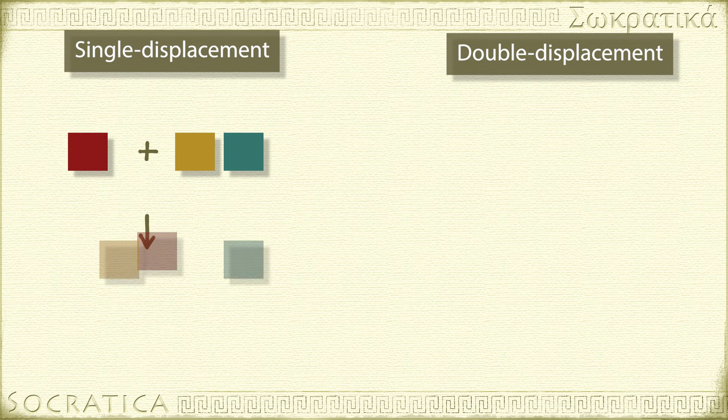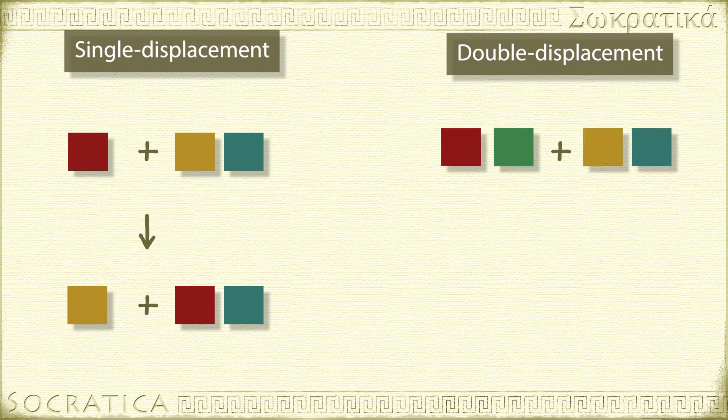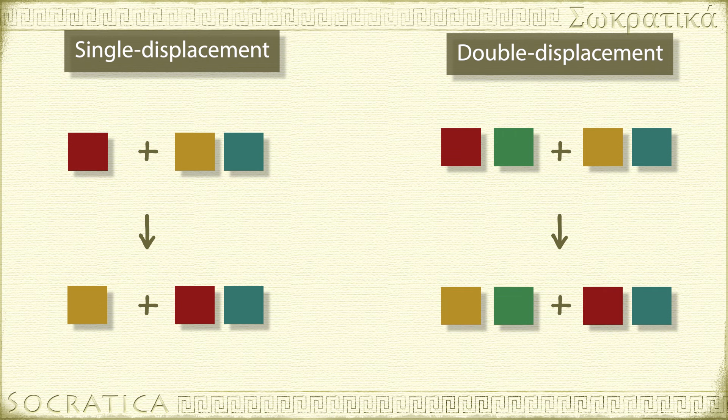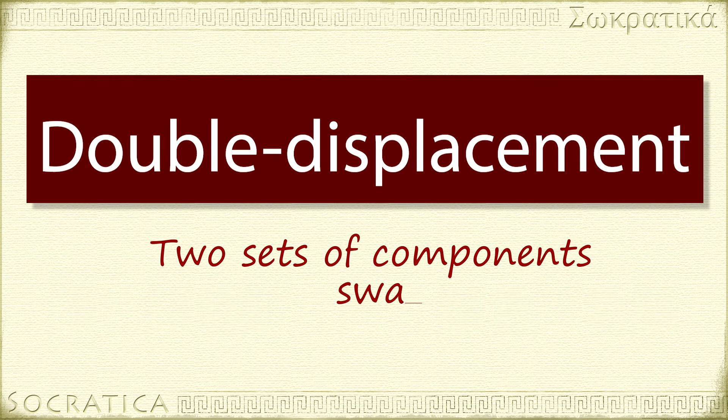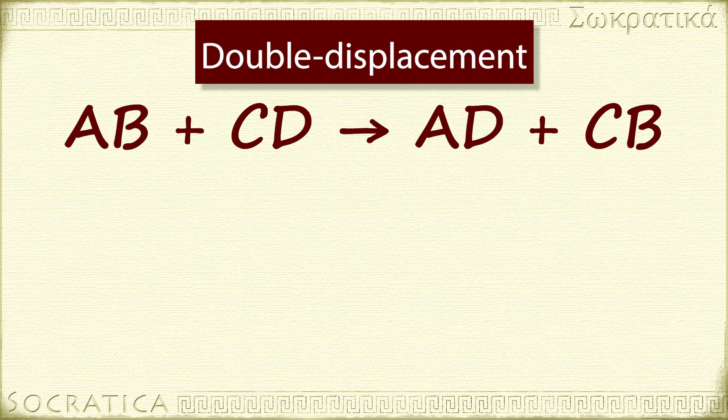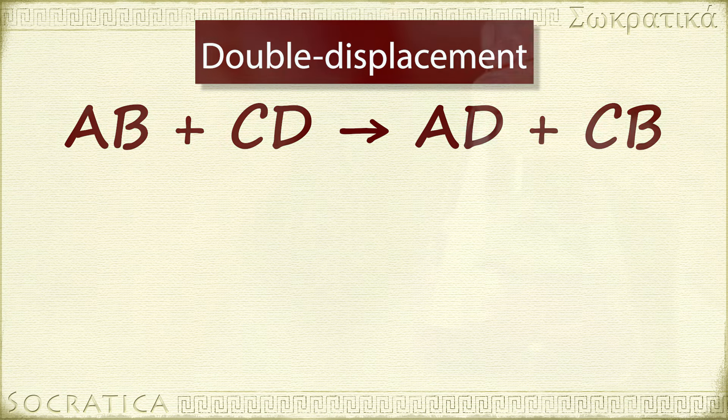We just saw how in single displacement reactions, one set of ions swaps places. In double displacement reactions, two sets of components swap places. You have two reactants swapping parts to form two new compounds. These kinds of reactions follow the general form AB plus CD yields AD plus CB.